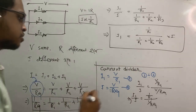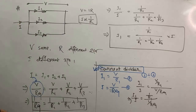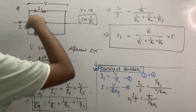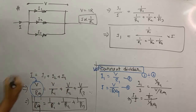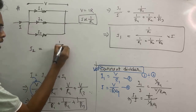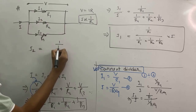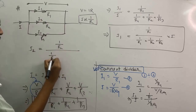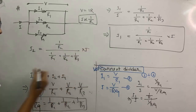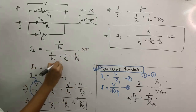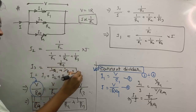This is the current divider formula. I2 is equal to R1 and R2 and R3. So i2 equal to R2 into i, and i3 equal to 1 by R3 divided by 1 by R2 into i.